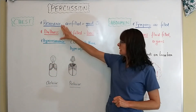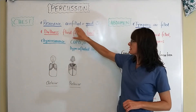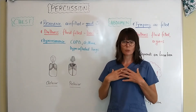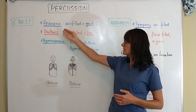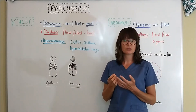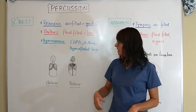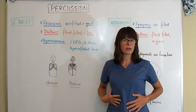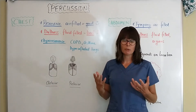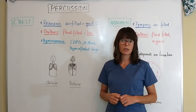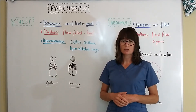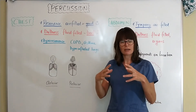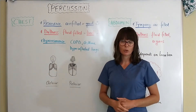For chest percussion, there are three different sounds we might hear. Resonance is an air-filled space, which is good — in the chest we want to percuss the lungs, and resonance sounds hollow and air-filled, just as we'd expect the lungs to be. Dullness indicates something fluid-filled, which is bad in the lungs. This could mean an infection, pneumonia, or a pleural effusion. Dullness occurs when the cavity underneath is not air-filled and does not resonate as much.